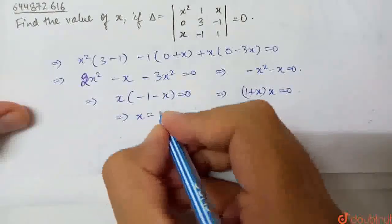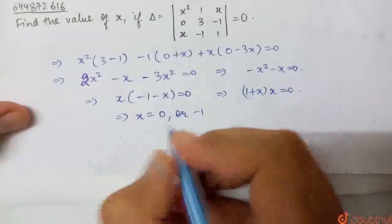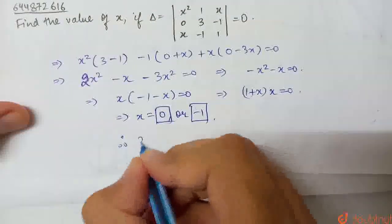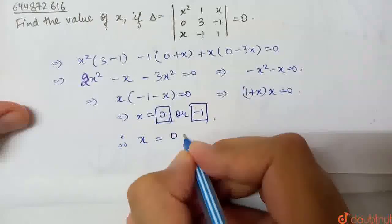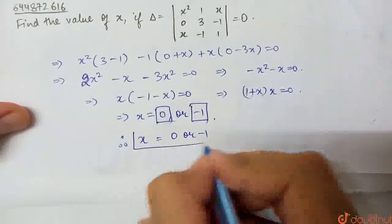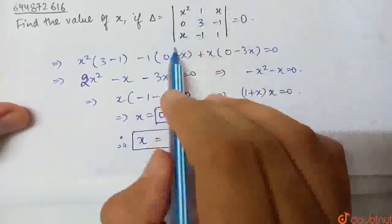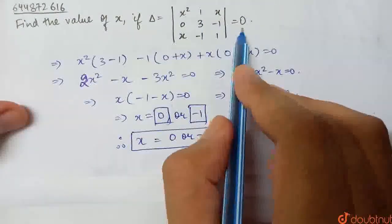Therefore, we have 0 and minus 1. It will be 2 possible values. Therefore, x is equal to 0 and minus 1 is our required answer. The 2 possible values are x equal to 0 or minus 1.